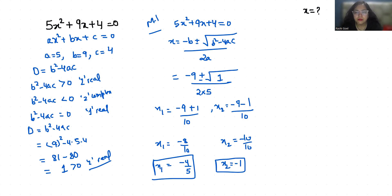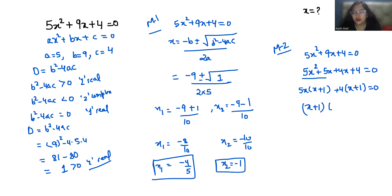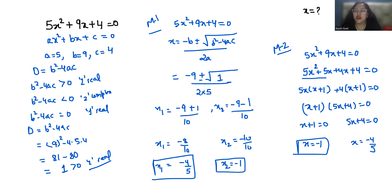Now Method 2: I am going to use the middle-term split method and write 9x as 5x plus 4x. So 5x squared plus 5x plus 4x plus 4 equals 0. Taking common factors from the first two terms and last two terms, we get x equals minus 4 by 5 and x equals minus 1. These are the two values of x.